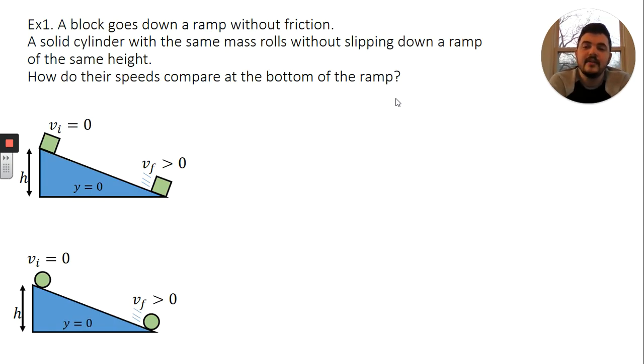We have a box that goes down a ramp without friction. We have a solid cylinder with the same mass that rolls down a ramp without slipping, and that ramp has the same height. And we want to know how their speeds compare at the bottom of the ramp. Again, a conceptual question, not a quantitative one.